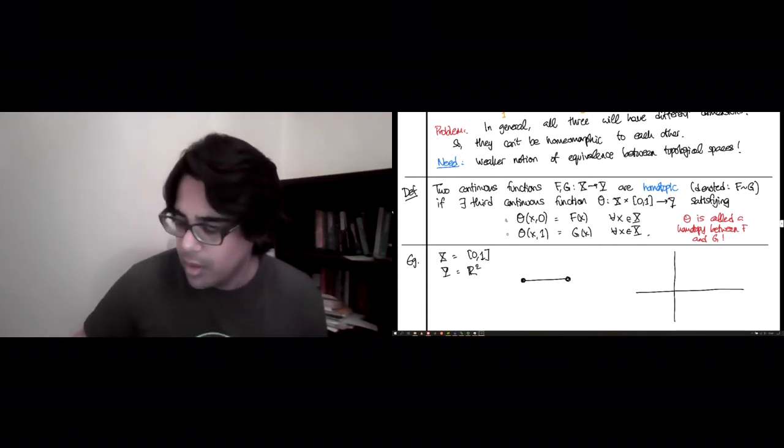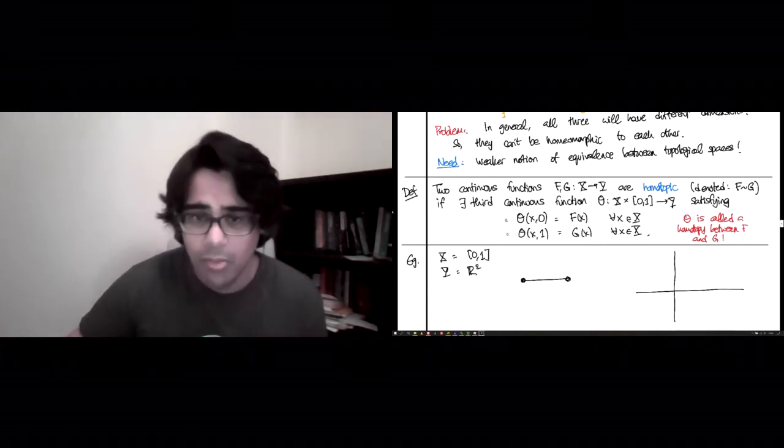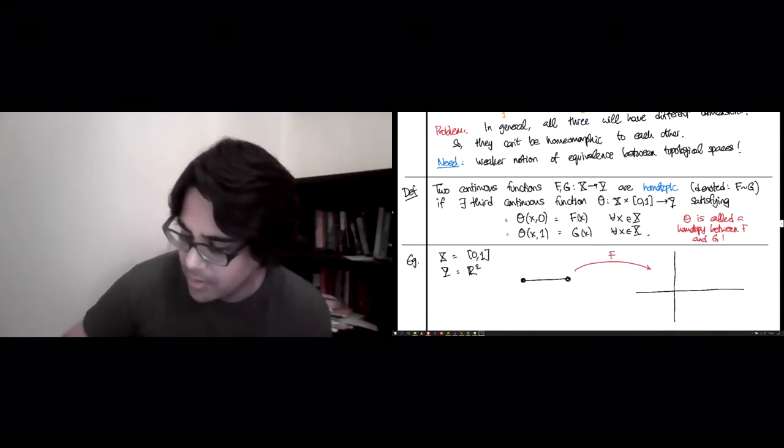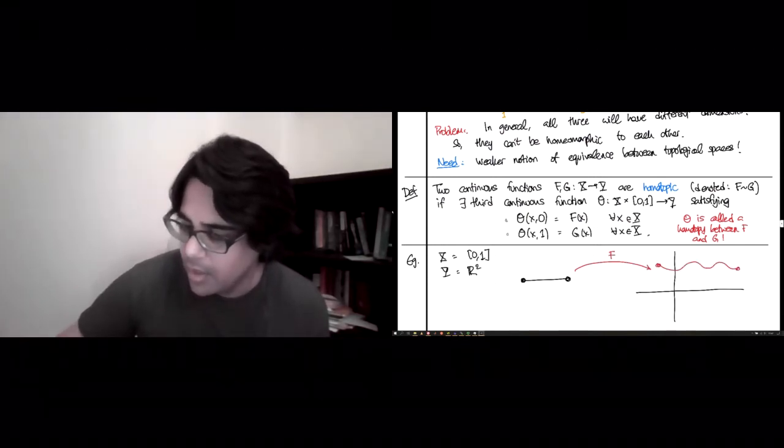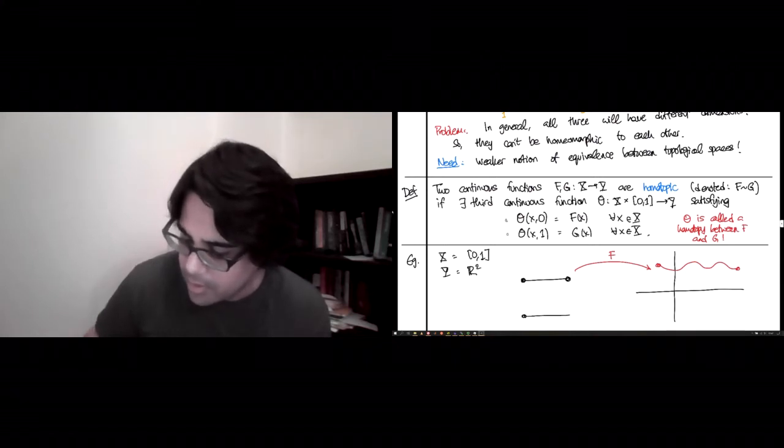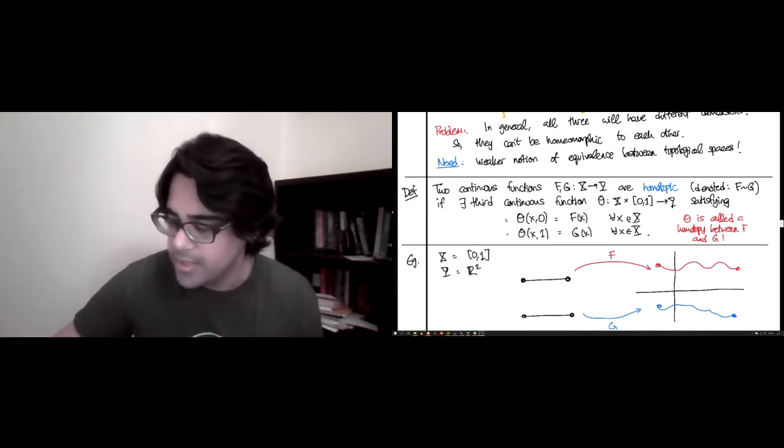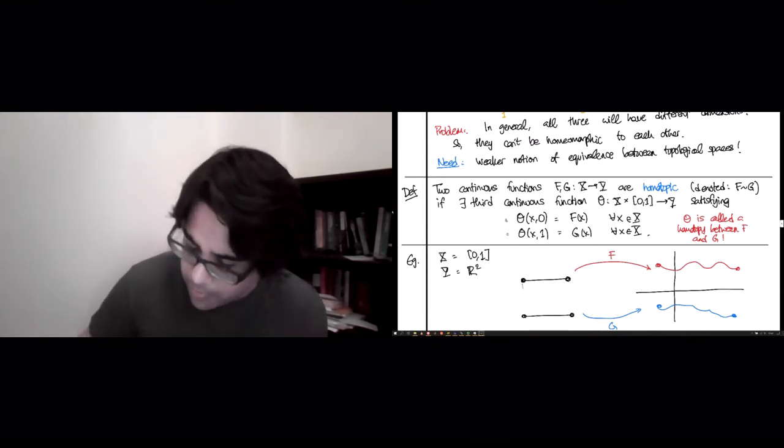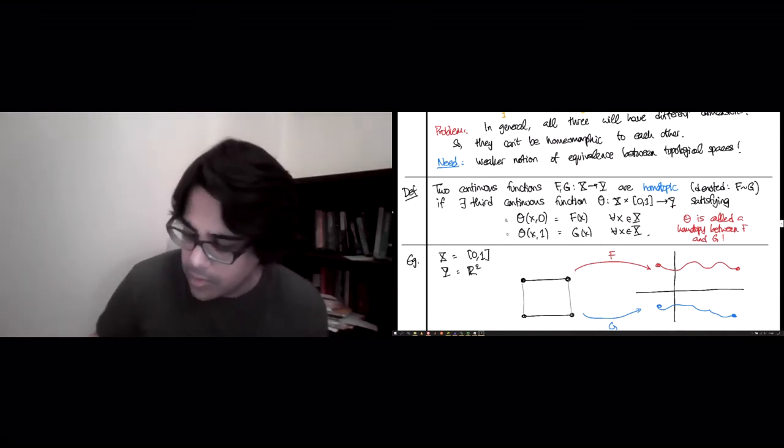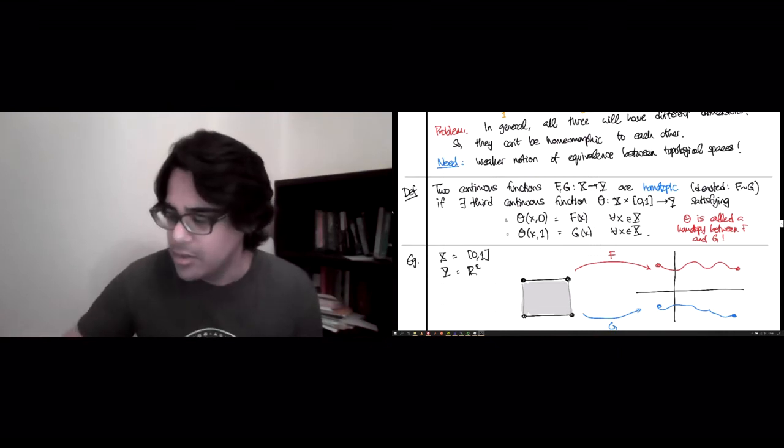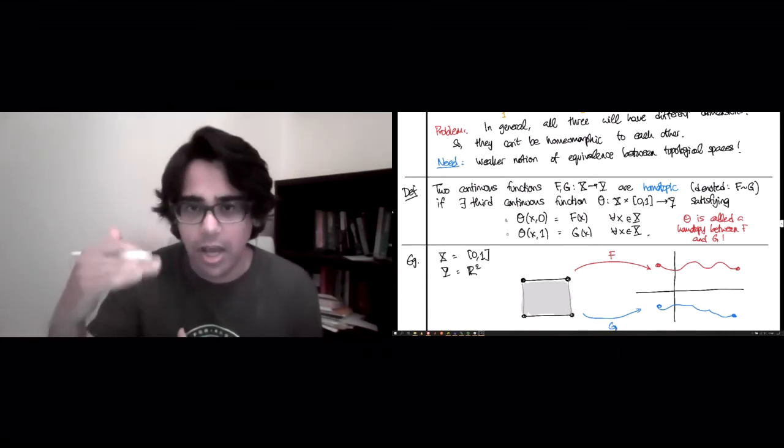So here's X and here's Y. So let's draw a map. What would a map f from X to R^2 look like? Well, a continuous map. Maybe it looks something like this. And now here's another copy of X and let's draw another map g. It looks like that.